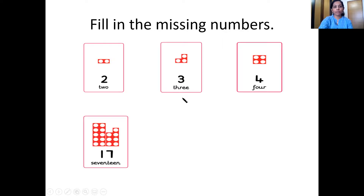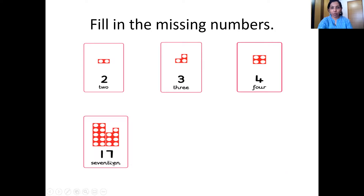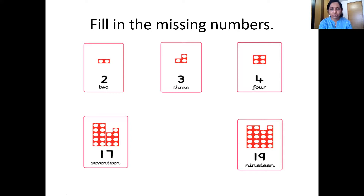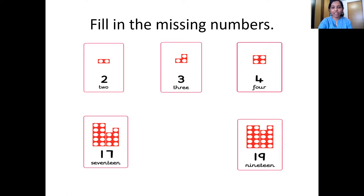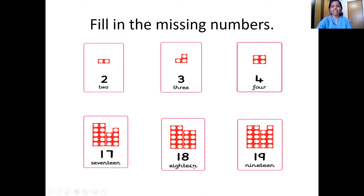Now let's see one more. Which number is this? One ten number tile, one seven number tile — that's right, it's seventeen. We have one more card — nineteen. One ten number and one nine number tile makes nineteen. So something is missing. Which number comes after seventeen and before nineteen? Eighteen — very good. That's number eighteen.